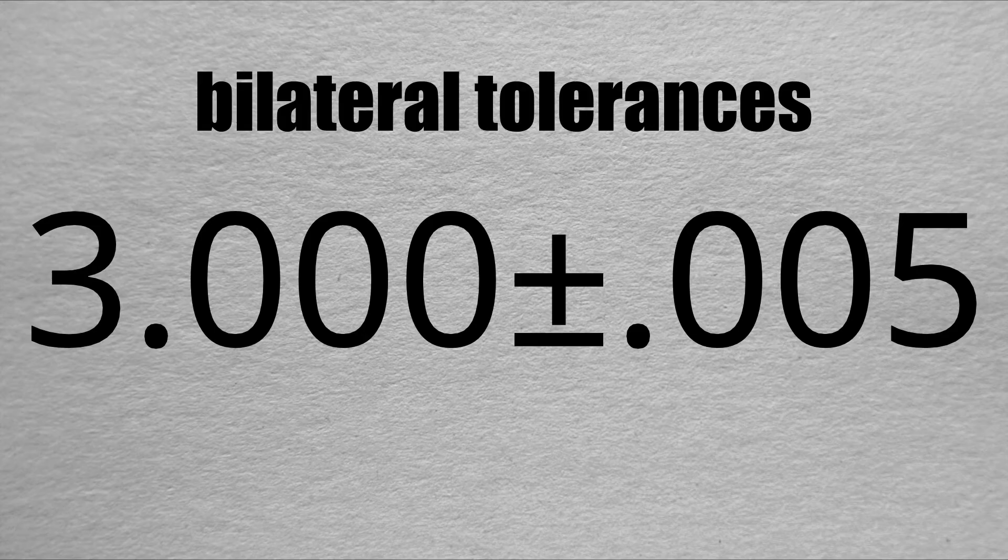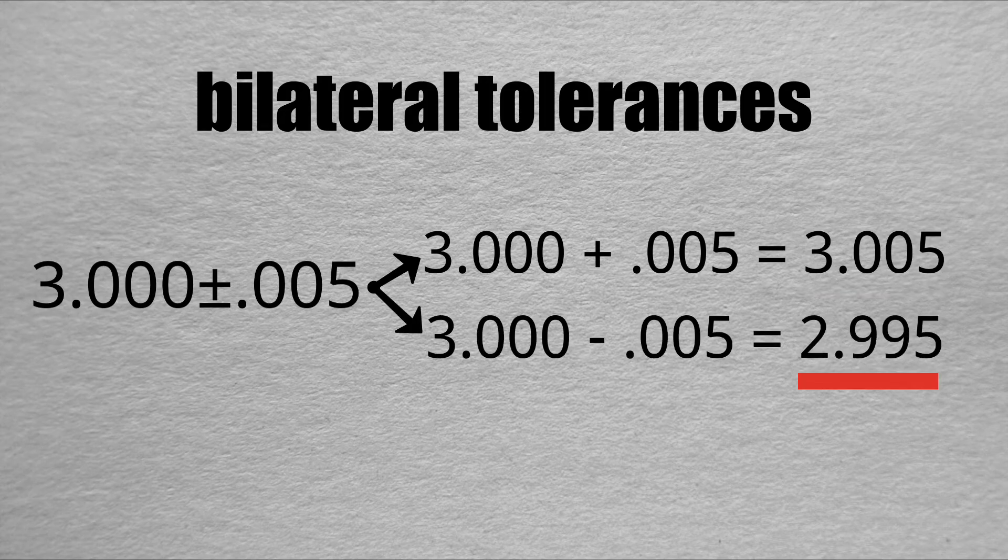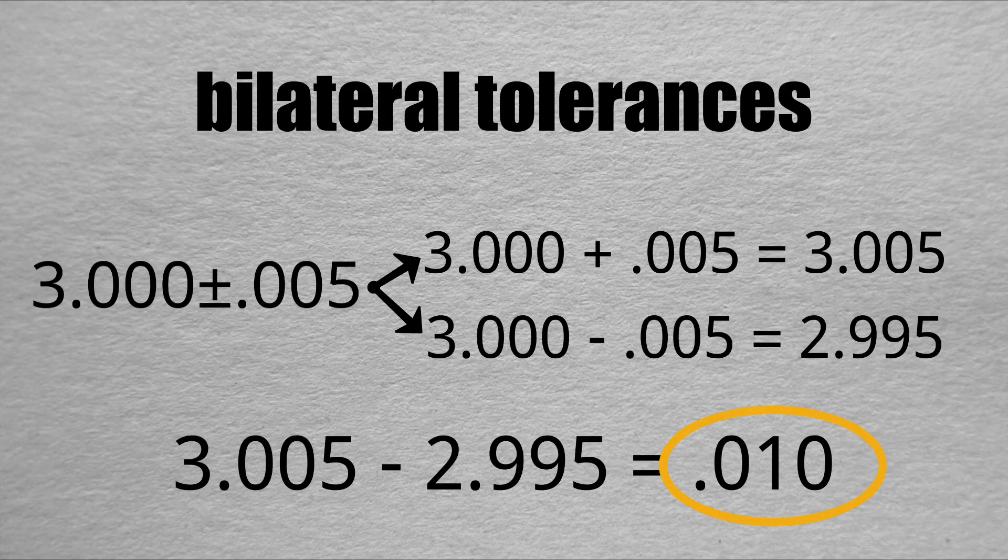Calculating tolerance can be done in two ways. You can add the indicated number to the specified number to get your upper limit, and then subtract the indicated number from your specified number to get the lower limit. Finally, you subtract to get the tolerance.